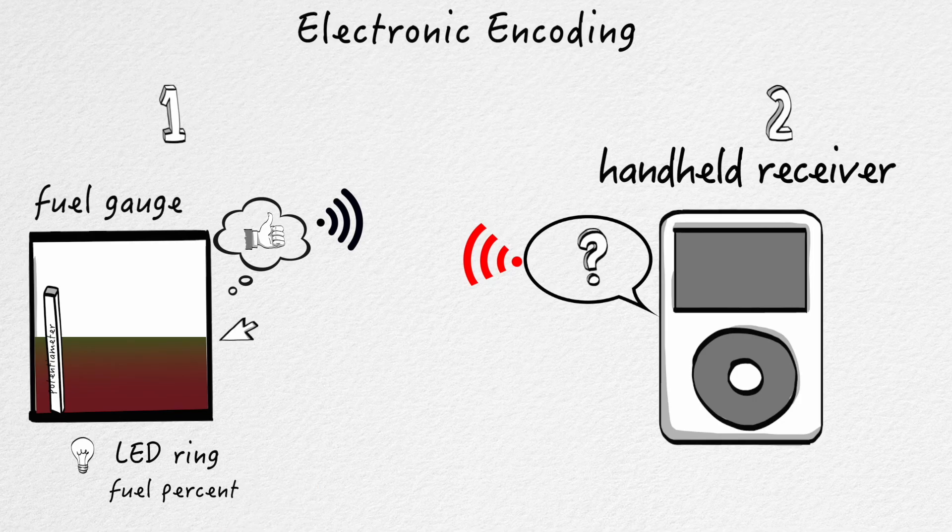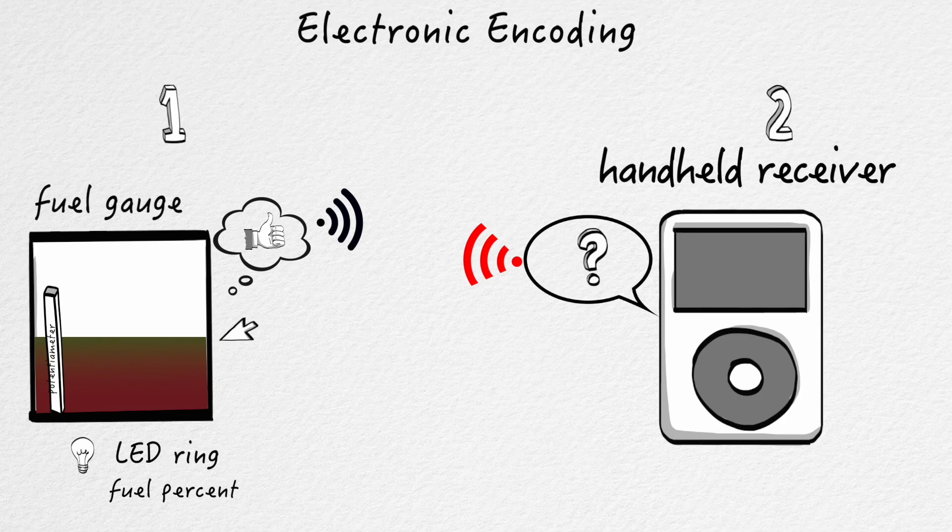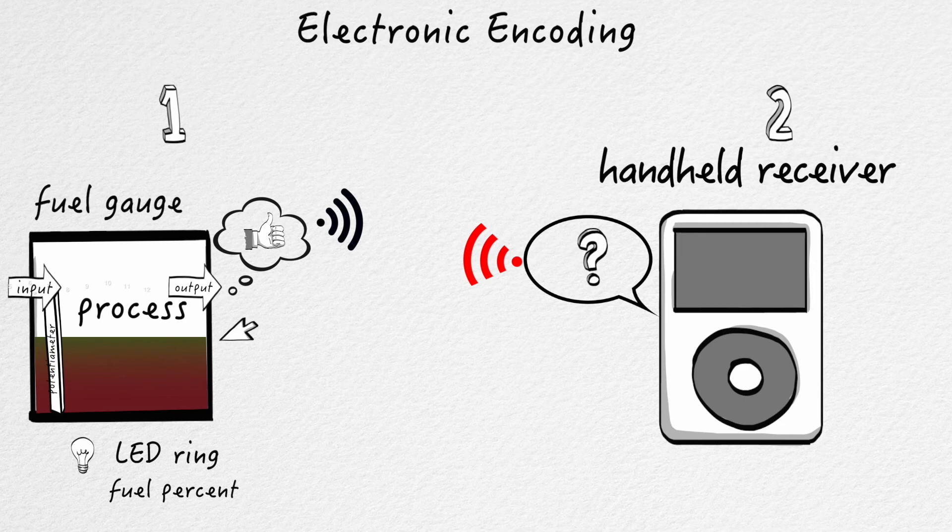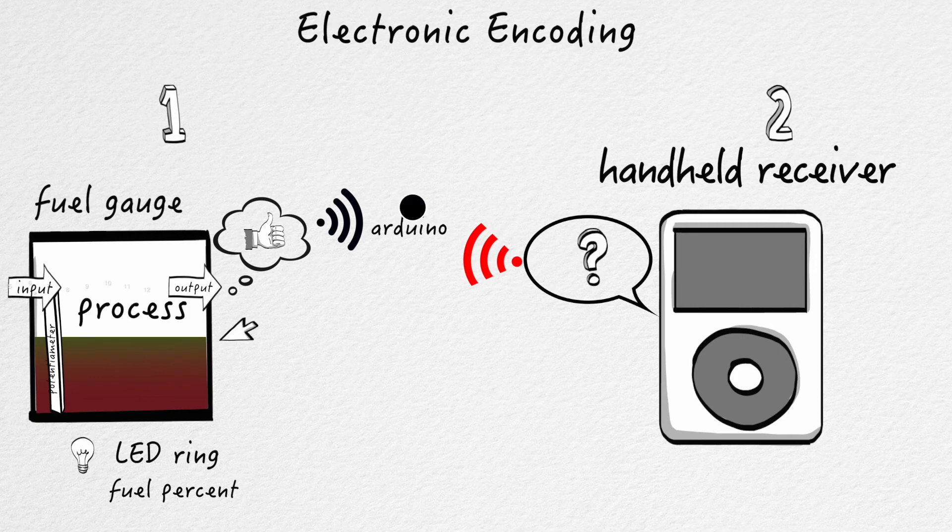With this system, and pretty much every system, there's an input, there's a process, and there's an output. Now, for the fuel gauge, the input is going to be our value from the potentiometer. Just based on how the Arduino, that is the brains of the whole operation, how it reads voltage.